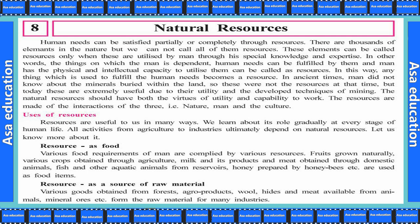Human needs can be satisfied partially or completely through resources. There are thousands of elements in nature, but we cannot call all of them resources. These elements can be called a resource only when they are utilized by men through special knowledge and expertise. In other words, the things on which men are dependent, and through which human needs can be fulfilled, and men have the physical and intellectual capacity to utilize them — those can be called resources. Anything which is used to fulfill human needs becomes a resource.